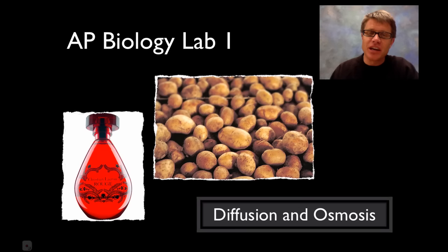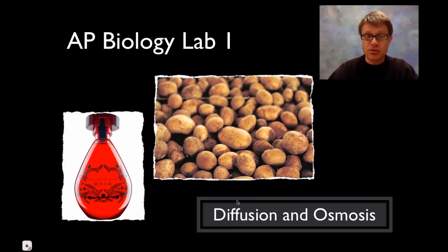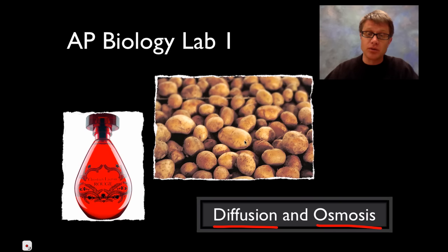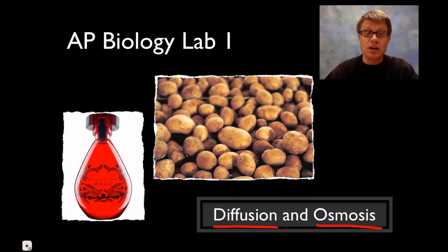Hi. It's Mr. Andersen and welcome to the AP Biology Lab 1 walkthrough. This lab is on two things: diffusion and osmosis. In the diffusion portion we're going to do a demonstration, and in the osmosis lab we'll do the potato lab, where we put potatoes in different concentrations of sugar water. Let me quickly define what diffusion and osmosis are.